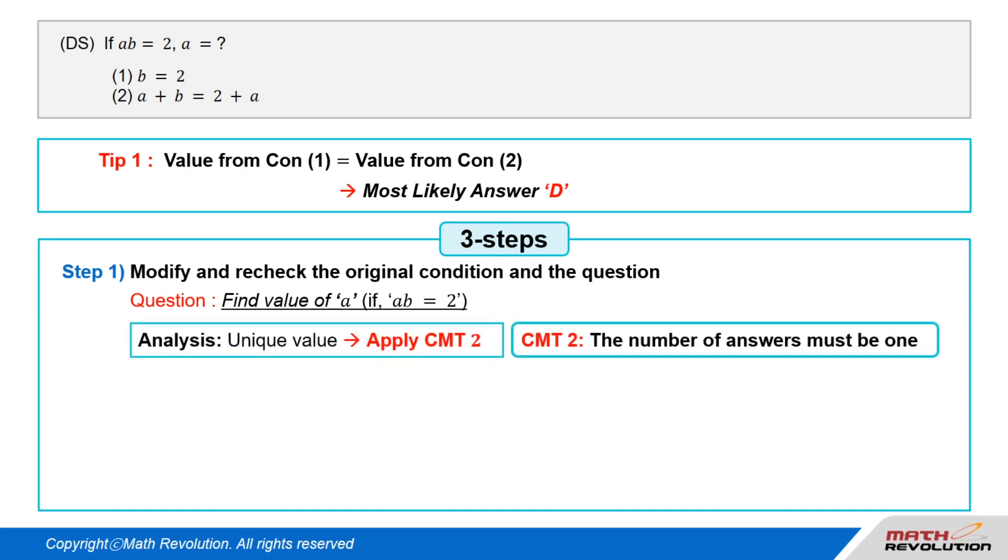Let's look at the information from the question prompt or the original condition. The answer to this question will be in terms of a unique value of A, and therefore, we apply CMT2, which means that the number of answers must be 1 to this question.